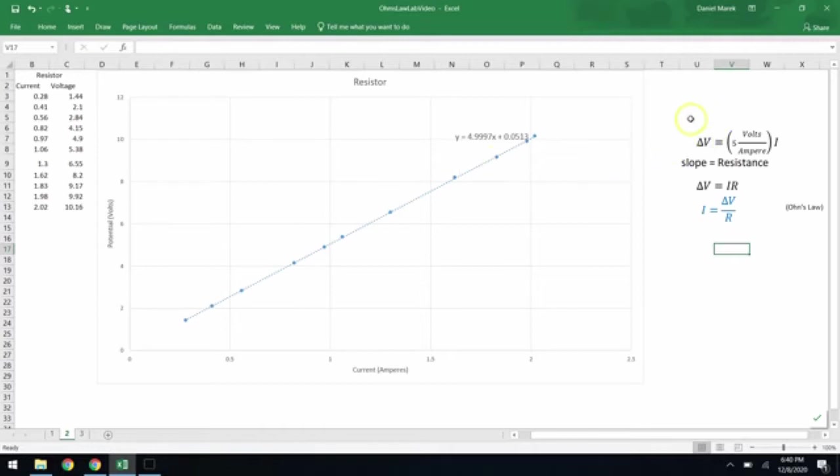5 is a little bit easier number to work with. And so we can write an equation like this: Delta V equals 5 volts per ampere times I. Volts per ampere would be the unit for that slope. And we just give that slope the name resistance. So the slope of that line, the rate at which the potential increases as the current increases, we just call that resistance.